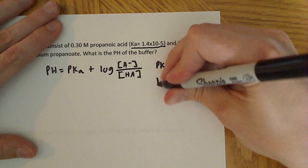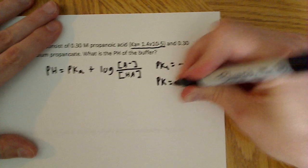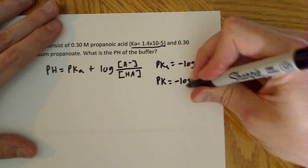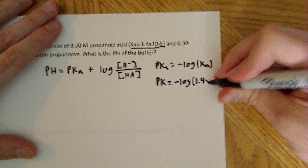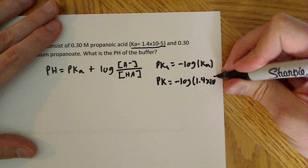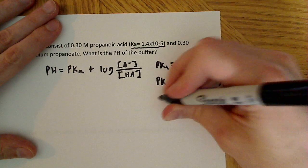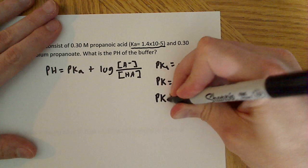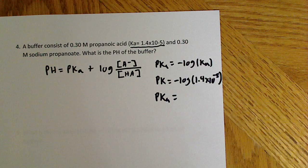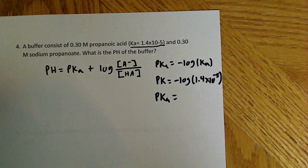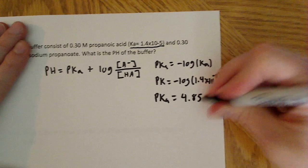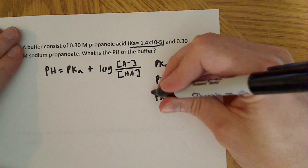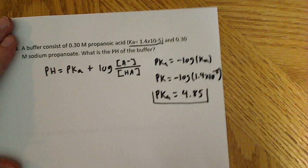So the pKa is equal to the negative log of 1.4 times 10 to the negative 5th. So pKa, in this case, is equal to 4.85. So that is the first part of it.